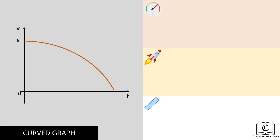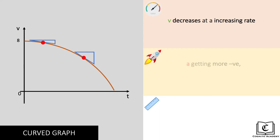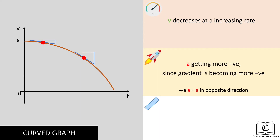Here, we see that velocity is decreasing from 8 meters per second to 0 at a non-constant increasing rate. Looking at the gradient, since it is pointing down, gradient and hence acceleration is negative. Gradient is getting steeper, hence gradient and hence acceleration is getting more negative. Displacement is still positive since the area under the graph is positive.